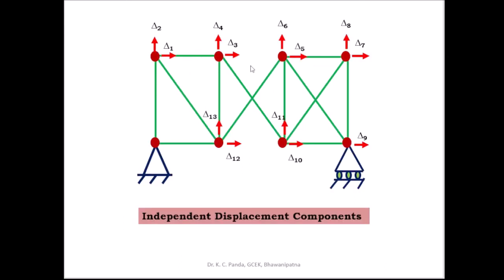The 13 independent displacement components are delta 1, delta 2, delta 3, delta 4, delta 5, delta 6, delta 7, delta 8, delta 9, delta 10, delta 11, delta 12, and delta 13. These are the 13 independent displacement components that take place in this problem.